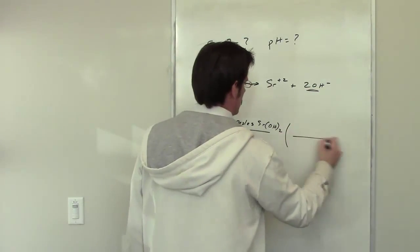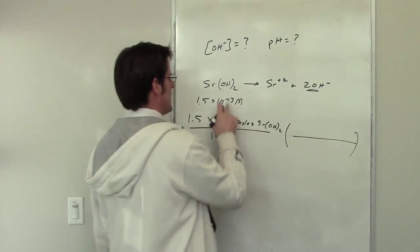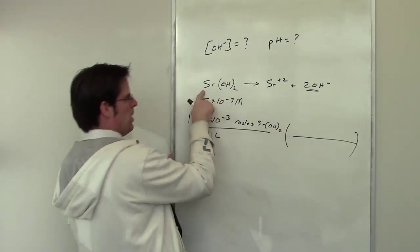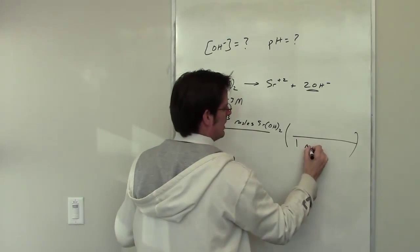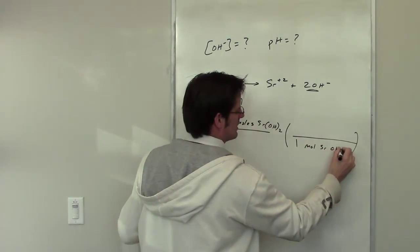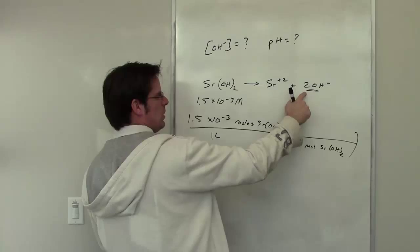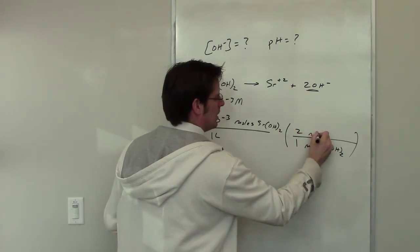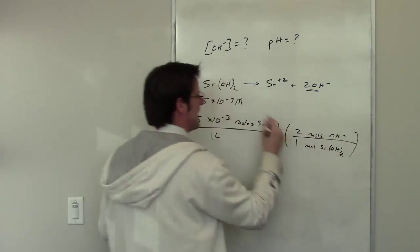What I'll do is use dimensional analysis. I can write down stoichiometrically you can see that for every one mole of strontium hydroxide, you've got two moles of hydroxide coming out of it.